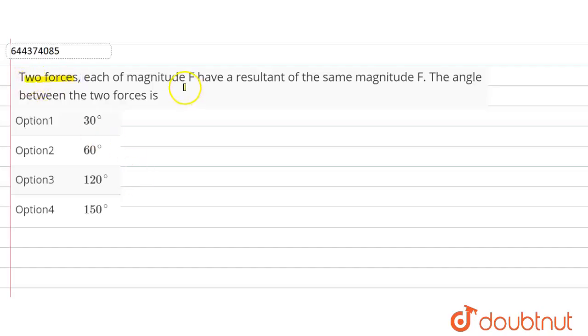Hello friends, the question given here is: two forces, each of magnitude F, have a resultant of the same magnitude F. Find the angle between the two forces.